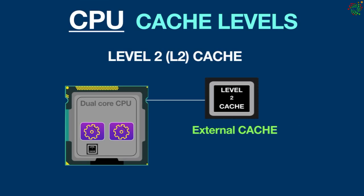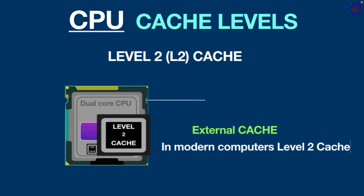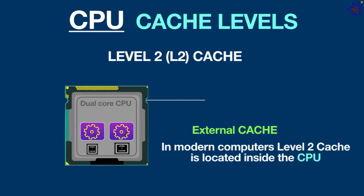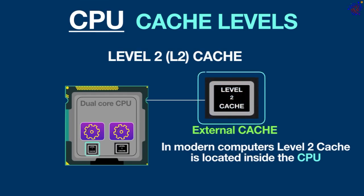Level 2 cache, which is also called external cache, is larger in size and slightly slower in speed compared to level 1 cache. In older computers, level 2 cache was located outside the CPU on a separate chip, but in modern computers it is located inside the CPU. The whole idea behind level 2 cache is that if the CPU cannot find the data it needs in level 1 cache, then it searches the level 2 cache for the data.